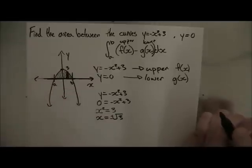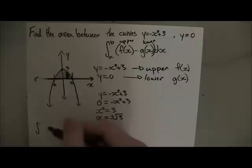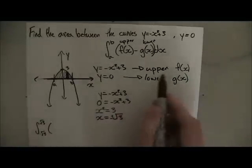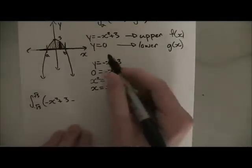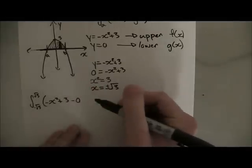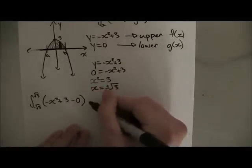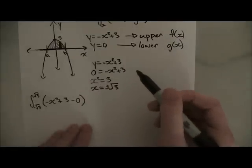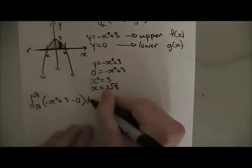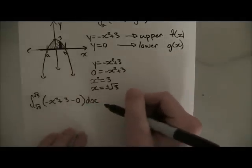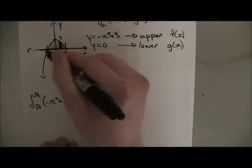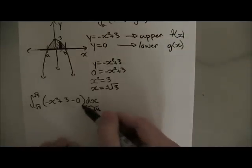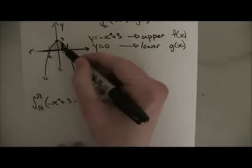Now we can write our complete integral. a is minus root of three and b is root of three. The upper function is minus x squared plus three, minus the lower function which is zero, times dx. Remember, dx represents the width of all the little rectangles from a to b, and the function calculates the height of those imaginary rectangles.